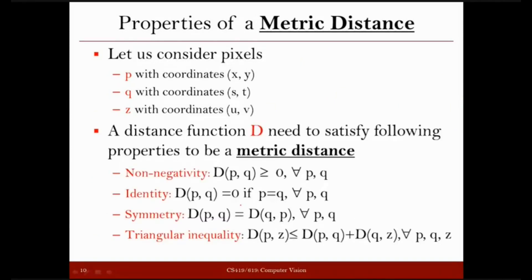Now let us define the normalized Euclidean distance. This is very similar to Euclidean distance, but with a normalization step. The formula structure is the same as Euclidean distance, except instead of using original coordinates xi and yi, we use normalized values xi-prime and yi-prime. Let us first understand why we need normalized Euclidean distance and what problem arises with normal Euclidean distance.